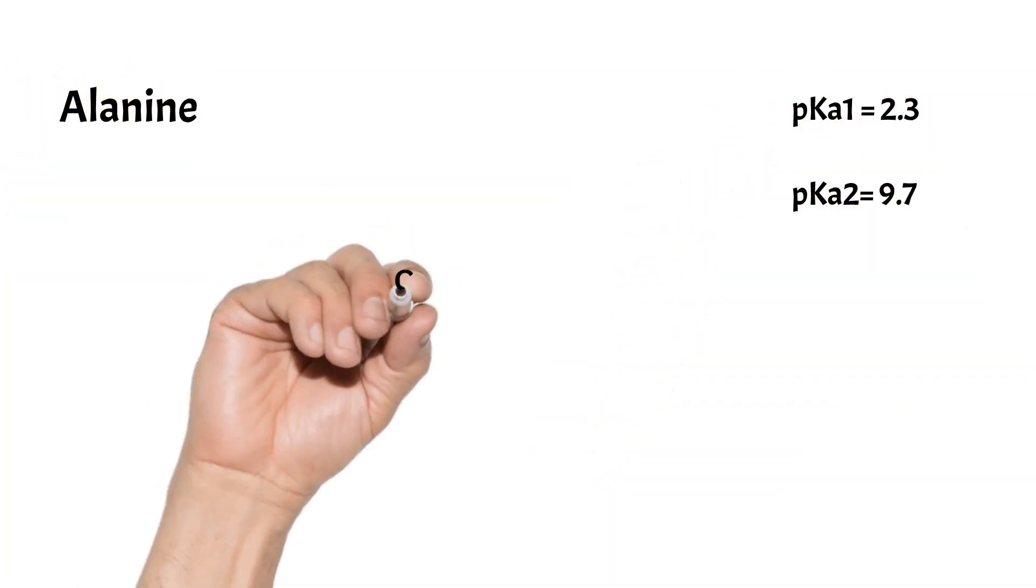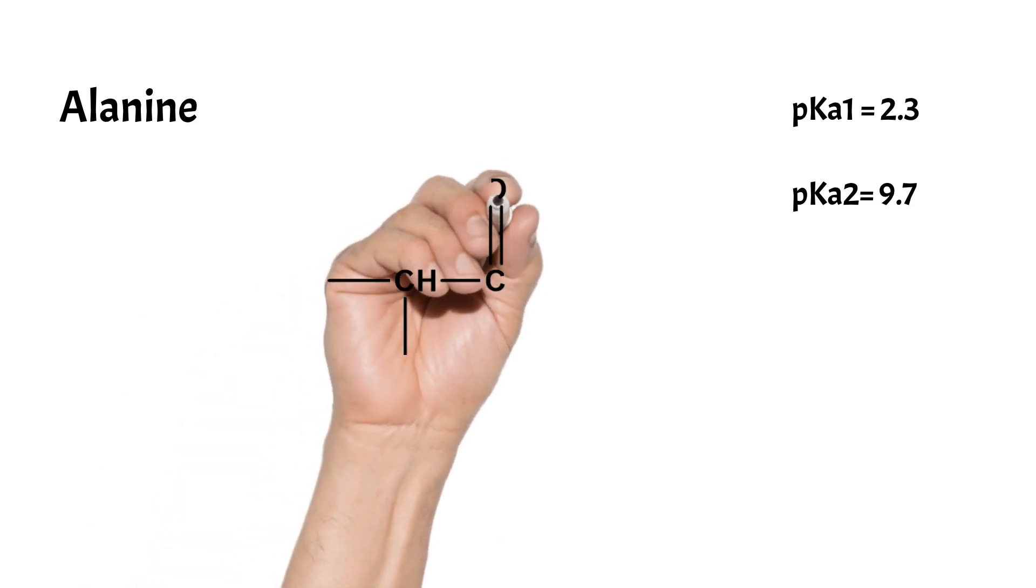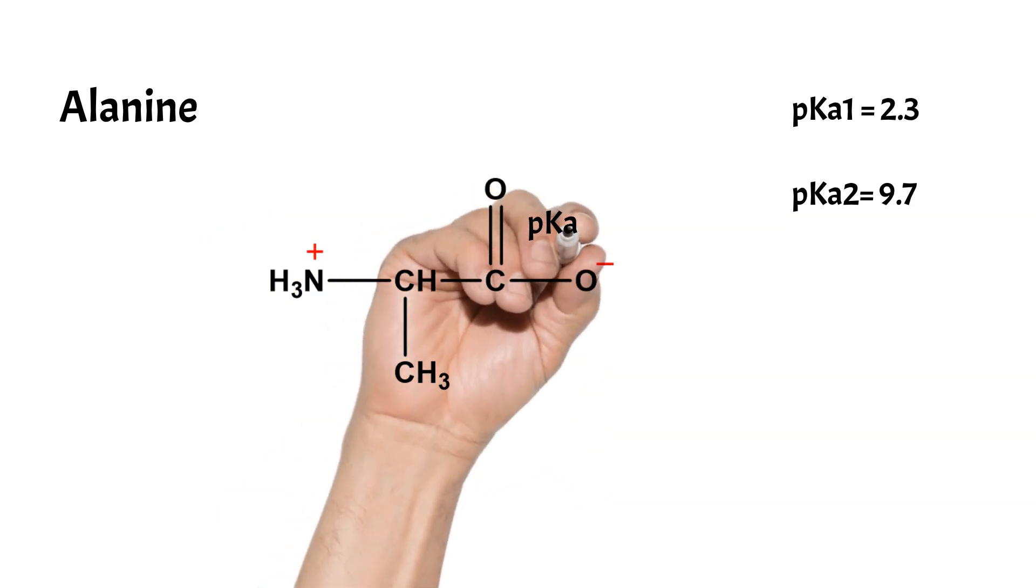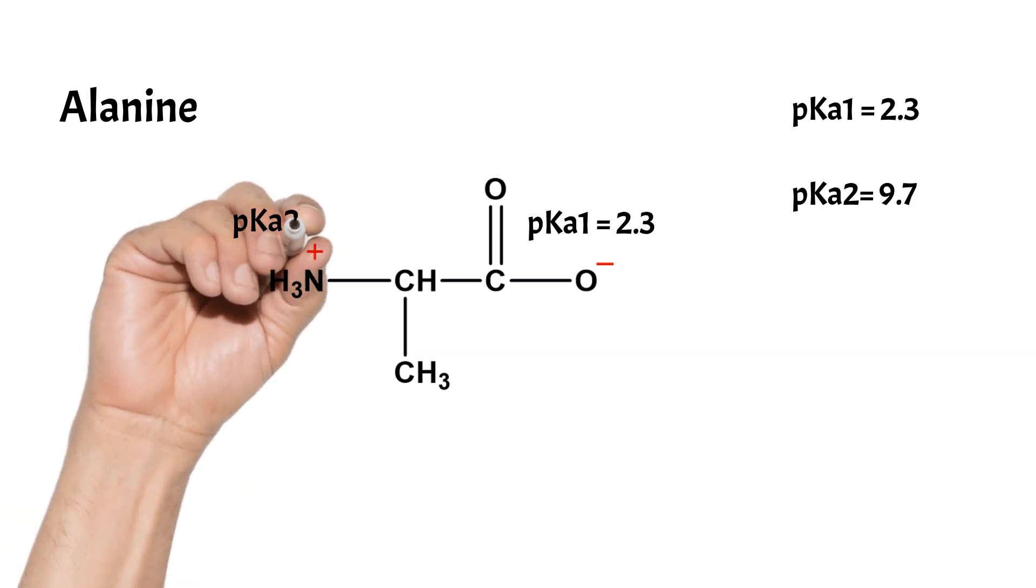Let's start with alanine as an example for amino acids with only one group of both alpha-carboxyl and amino groups. Alanine has two pK values: pK1 for the alpha-carboxyl group and pK2 for the alpha-amino group.